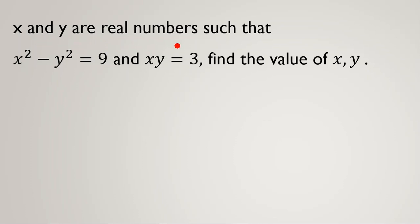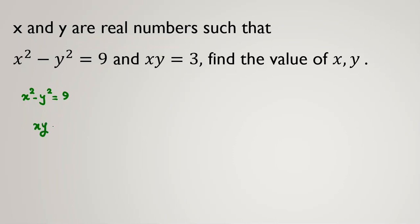x and y are real numbers such that x squared minus y squared equals 9, and xy equals 3. Find the value of x and y. We have two equations and two variables. One of the most useful ways is substitution: find one variable in terms of the other and replace it in the other equation.